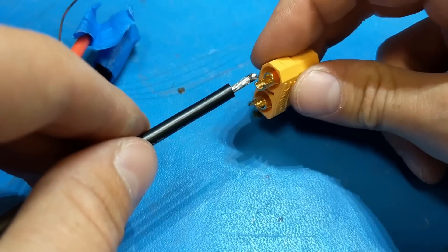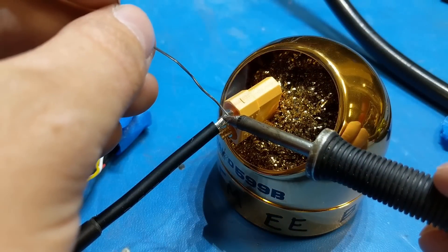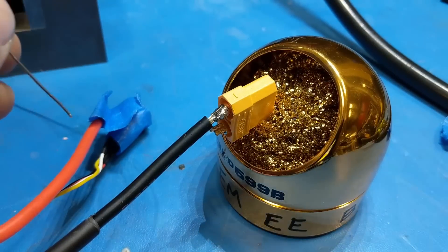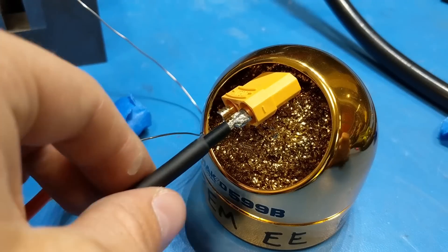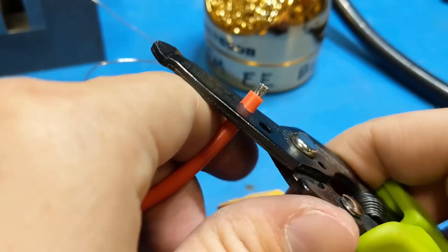Solder up the final output connector. Make sure to use heat shrink. It will prevent shorts between the phases and as well provide a little bit of strain relief for the soldered joint. Repeat for the other phase of the connector.